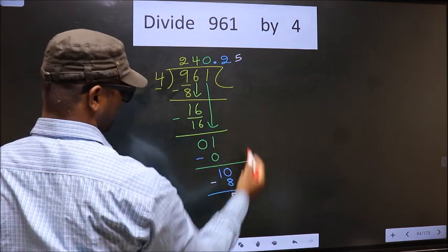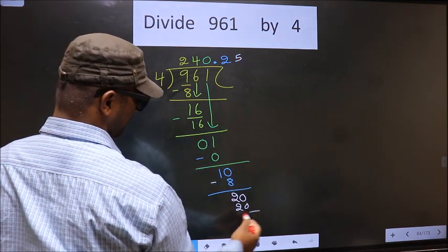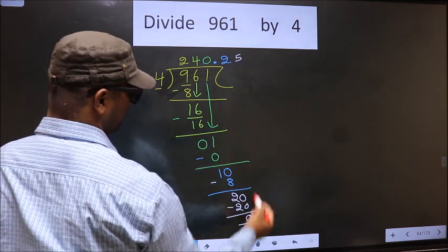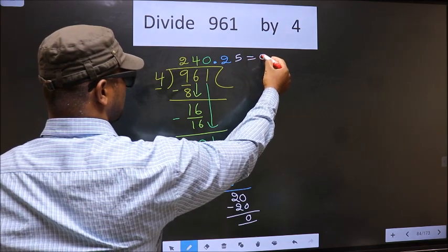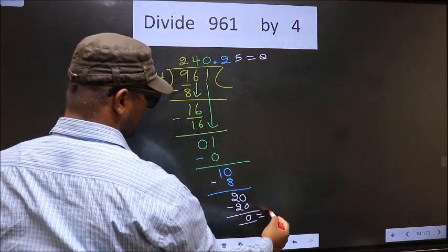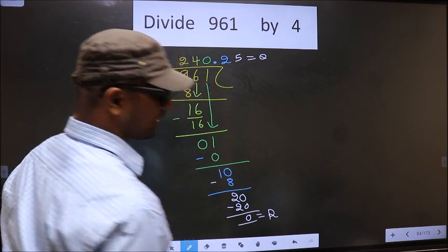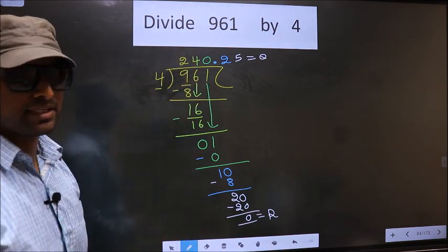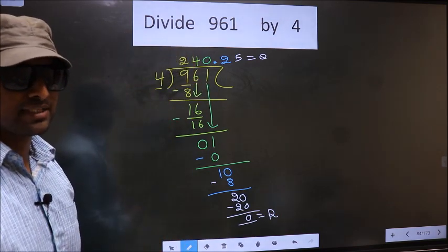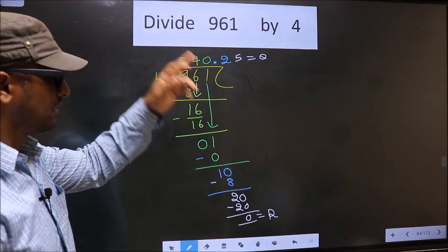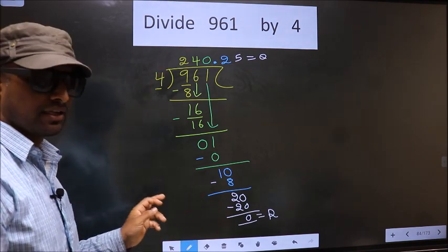When do we get 20 in the 4 table? 4×5=20. You subtract, you get 0. This is our quotient and this is our remainder. Did you understand where mistake happens? You should not do that mistake. Am I clear?